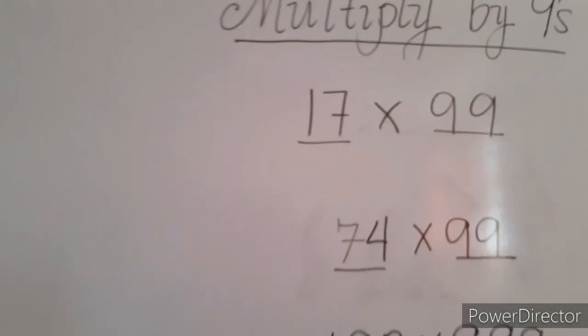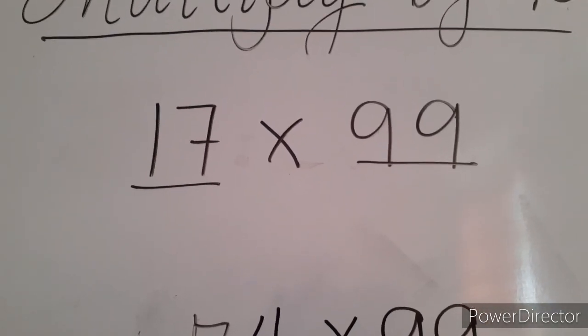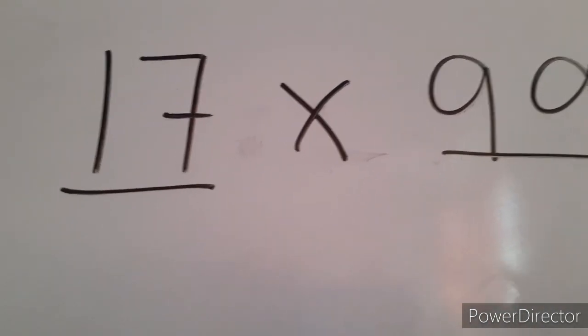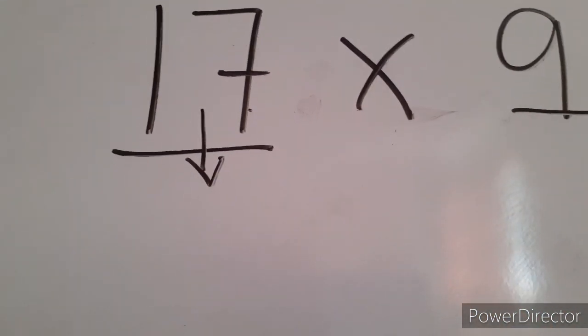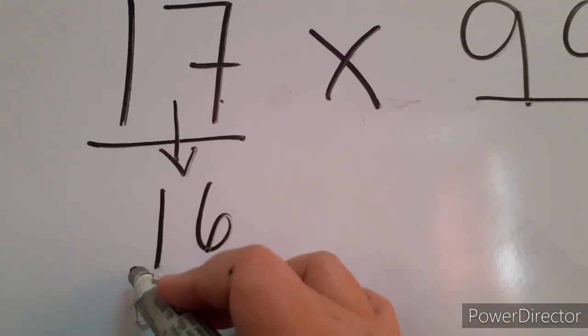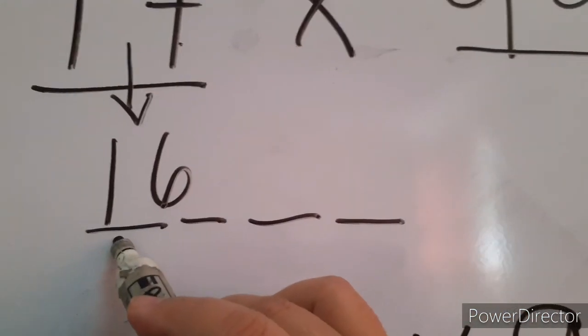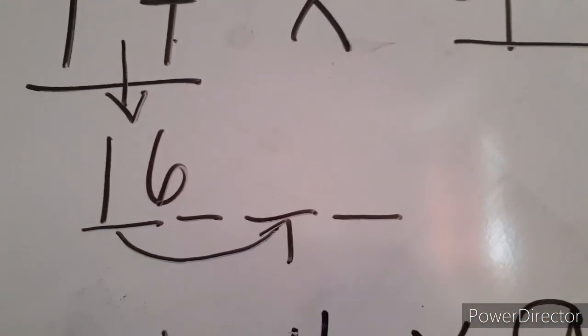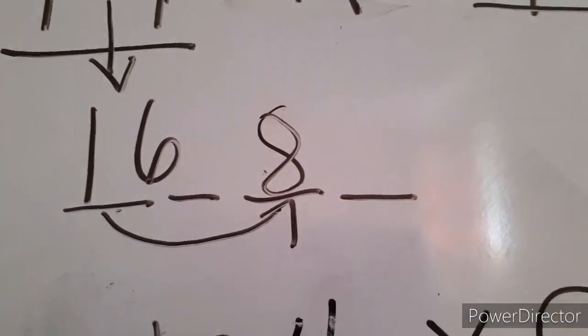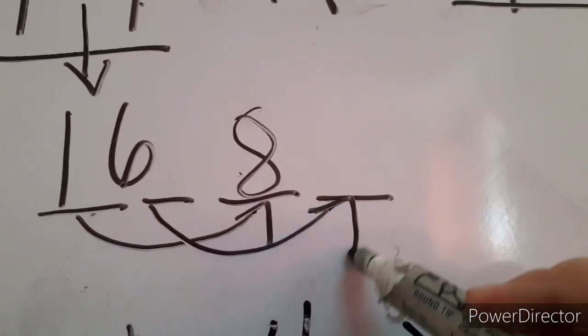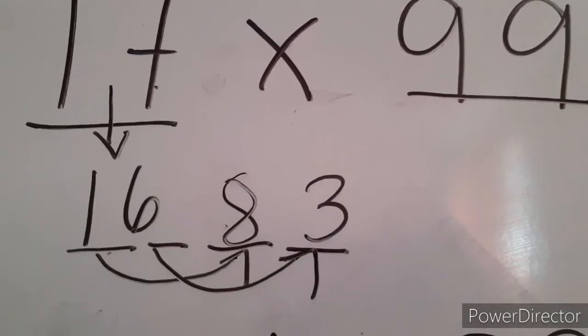Now, let us proceed with this one. How can we apply the concept of the previous with this given? 17 times 99. So, what we do is, we take the number 1 smaller than the given. So, 1 smaller than 17 is 16. That's our first 2 digits. Next. The last 2 digits is, we think of a number that what can we pair with 1 so that it will give us the sum of 9. 1 plus blank is equal to 9. So, this must be 8. Next. 6 plus blank is equal to 9. This must be 3. Therefore, 17 times 99 is 1,683.